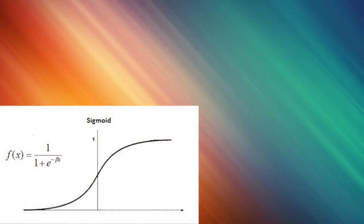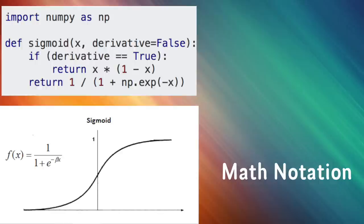Sigmoid has the mathematical form of f(x) equals 1 over 1 plus e to the negative x. It takes some number and squashes it into a range between 0 and 1. It was one of the first to be used because it could be interpreted as the firing rate of a neuron, where 0 means no firing and 1 means a fully saturated firing. It's pretty easy to understand, but it has two problems that have made it fall out of popularity recently.